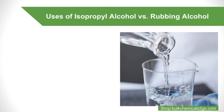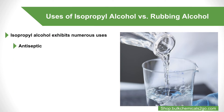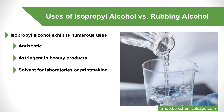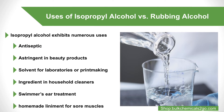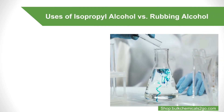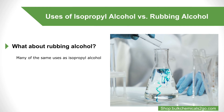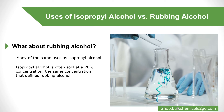Another possible way to distinguish isopropyl alcohol versus rubbing alcohol is to look at their respective uses. Isopropyl alcohol exhibits numerous uses including antiseptics, astringent and beauty products, solvent for laboratories or printmaking, ingredient in household cleaners, swimmer's ear treatment, and ingredient in homemade liniment for sore muscles. As it turns out, rubbing alcohol has many of the same uses as isopropyl alcohol. This makes sense given that isopropyl alcohol is often sold at a 70% concentration, the same concentration that defines rubbing alcohol. Thus, when contrasting isopropyl alcohol versus rubbing alcohol, their uses are not actually the most helpful feature to look at.